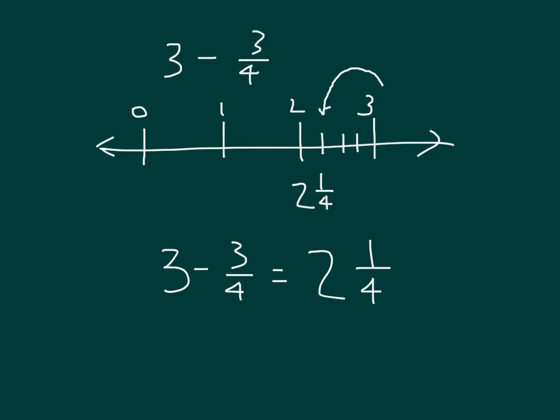I could also rewrite this problem as follows. I know that 3 does equal 2 plus 1. And when I look at that 1, then I know that I am still subtracting 3 fourths from it. So I have 2 plus 1 minus 3 fourths. 1 minus 3 fourths is 4 fourths minus 3 fourths, which does equal 1 fourth. So I have 2 plus 1 fourth, which does equal 2 and 1 fourth.